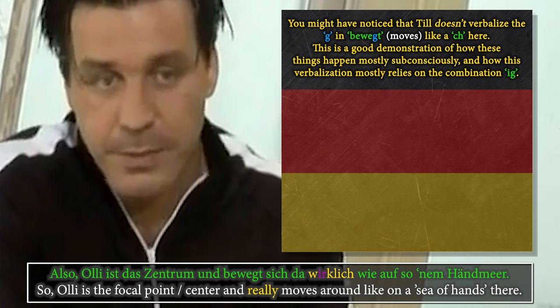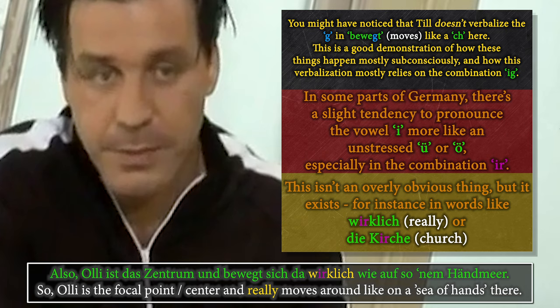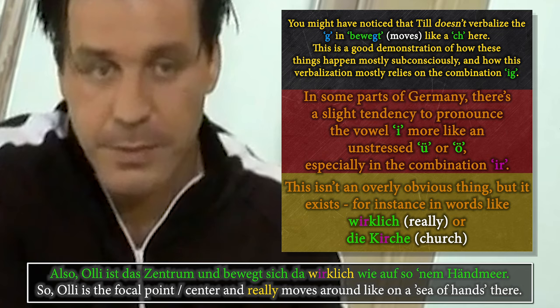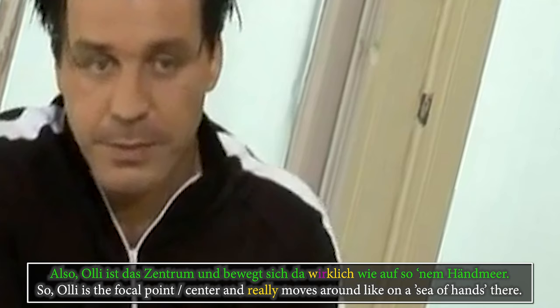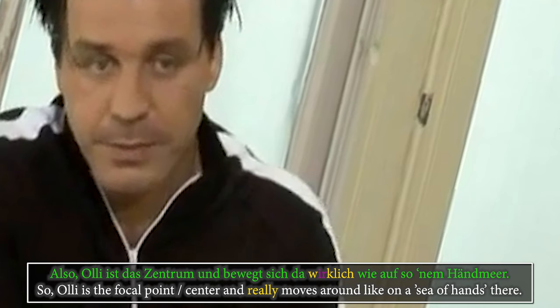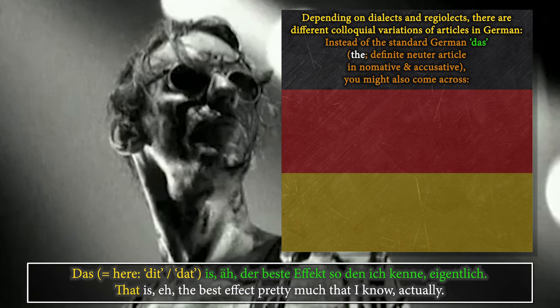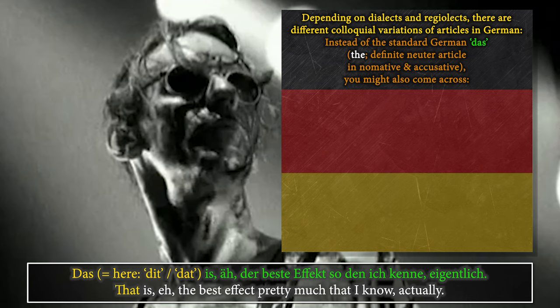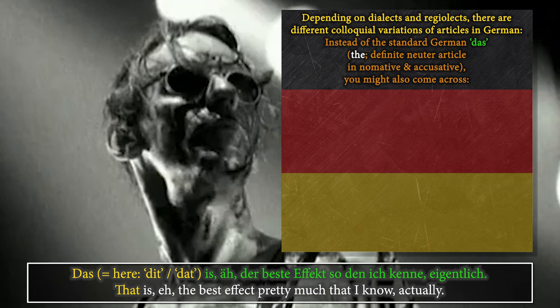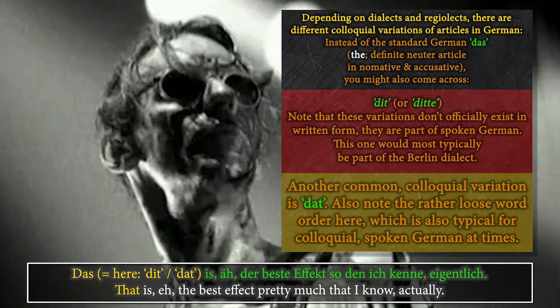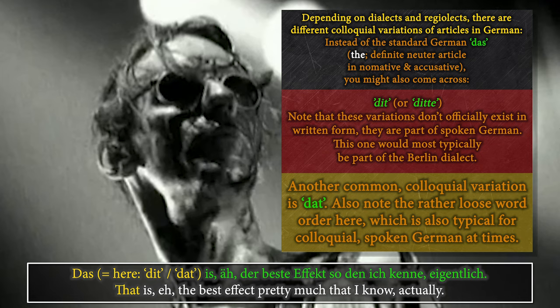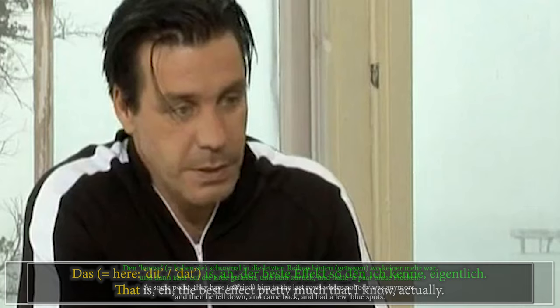Since he says it quite quickly, it's hard to hear properly whether he says 'dit' or 'dat', but either way both are colloquial, dialect-based forms of the neuter definite singular nominative and accusative article 'das'. 'Dit' with a short unstressed E would be highly typical for the Berlin dialect, for instance. In the Ruhr area — the Ruhrgebiet in North Rhine-Westphalia — many people also say 'dat' instead of 'das'. I actually do that as well, as I live in the Sauerland, which is pretty close to the Ruhrgebiet.